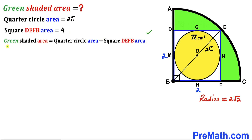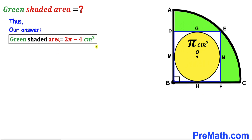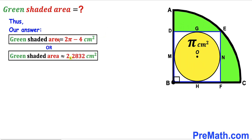Recalling our equation: green shaded area equals the area of the quarter circle minus the area of square DEFB. Filling in our values, the green shaded area equals 2π minus 4. Thus the area of the green shaded region turns out to be 2π minus 4 centimeters squared, which is approximately equal to 2.2832 centimeters squared. Thanks for watching and please don't forget to subscribe for more exciting videos!